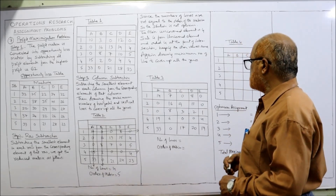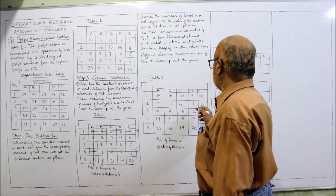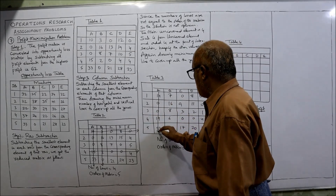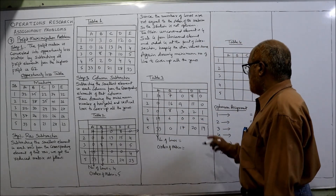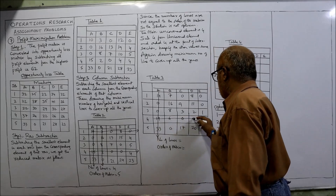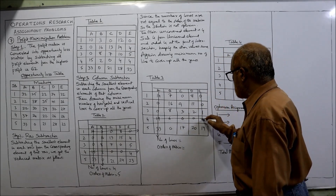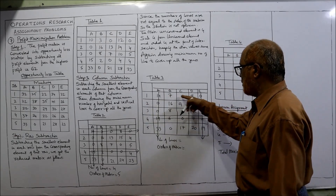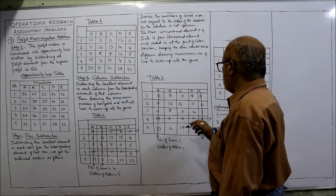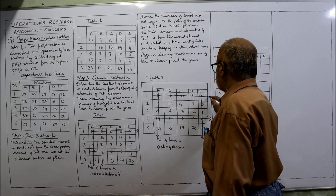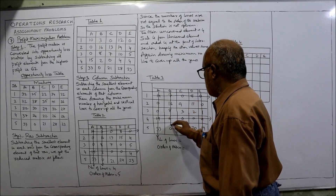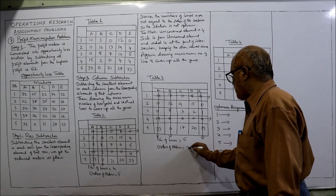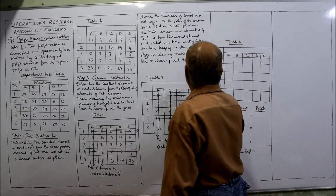Now draw lines covering all zeros. Looking column-wise and row-wise: maximum 2 zeros can be covered in a single line. Drawing the lines: one vertical line covers 2 zeros, another covers 2, another covers 2, another covers 2, and 2 remaining zeros are covered horizontally. Total lines: 1, 2, 3, 4, 5. Number of lines is 5, order of matrix is 5. Therefore, optimum solution is reached.